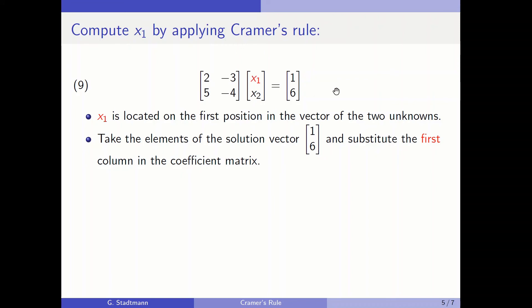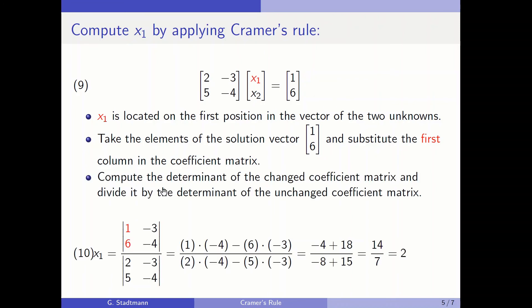Then you should compute the determinant of the changed coefficient matrix and divide it by the determinant of the unchanged coefficient matrix. This is shown in slide equation number 10. We have the changed coefficient matrix in the numerator and the unchanged coefficient matrix in the denominator. The two vertical lines here are not square brackets and not absolute value signs — they indicate that you should compute the determinant.